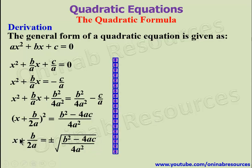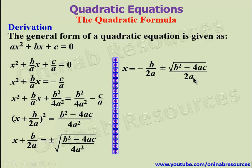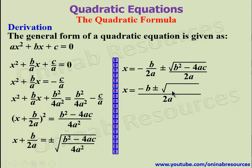We make x the subject of the formula by taking b over 2a to the right hand side, so that we now have x equal to negative b over 2a plus or minus the square root of b squared minus 4ac all over 2a. The denominators are the same, so we combine into a single fraction. This gives the quadratic formula: x equals negative b plus or minus the square root of b squared minus 4ac, all over 2a.